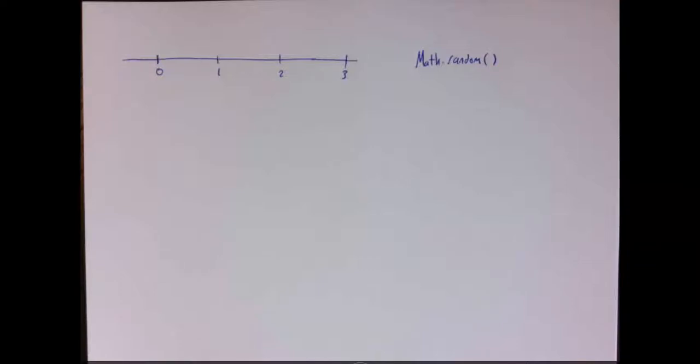Hi everybody, quick review about Math.random. So you already know that Math.random will return a double in the interval from 0 to 1, but that interval includes 0 and does not include 1.